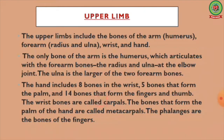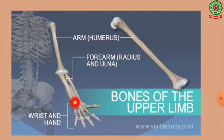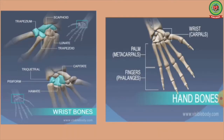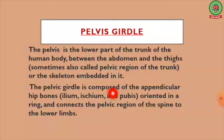The wrist bones are called carpals. The bones that form the palm of the hand are called metacarpals, and the phalanges are the bones of the fingers. In this image we can see the forearm comprising radius and ulna, and the wrist and hand comprising carpals, metacarpals, and phalanges. The phalanges are further divided into three types: proximal, intermediate, and distal.